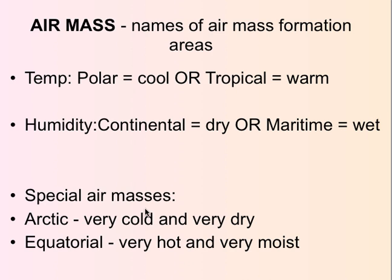There are two special air masses. If it forms over an Arctic area, it's very cold and very dry. And equatorial air masses are very hot and very moist. We don't tend to see these air masses in Minnesota.